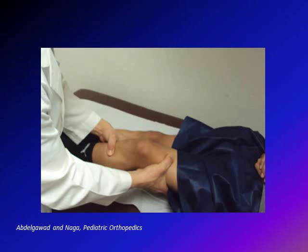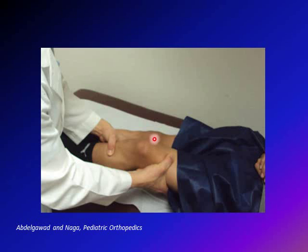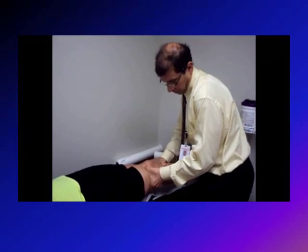The second test for stressing the ACL is the Lachman test. The knee is flexed about 30 degrees. With one hand you grab the lower end of the thigh, stabilizing the femur, and with the other hand you grab the upper end of the leg, then pull the tibia forward in relation to the femur. As with the anterior drawer test, you compare to the other side and assess for a soft or firm end point. The Lachman test is more sensitive; however, it can be difficult to perform if the physician's hand is small or the patient's leg is large.